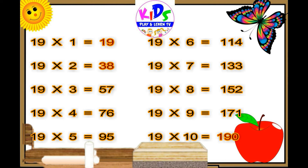Nineteen sixes are hundred and fourteen, nineteen sixes are hundred and fourteen. Nineteen sevens are one thirty-three. Nineteen eights are one fifty-two, nineteen eights are one fifty-two. Nineteen nines are one seventy-one, nineteen nines are one seventy-one. Nineteen tens are one ninety.